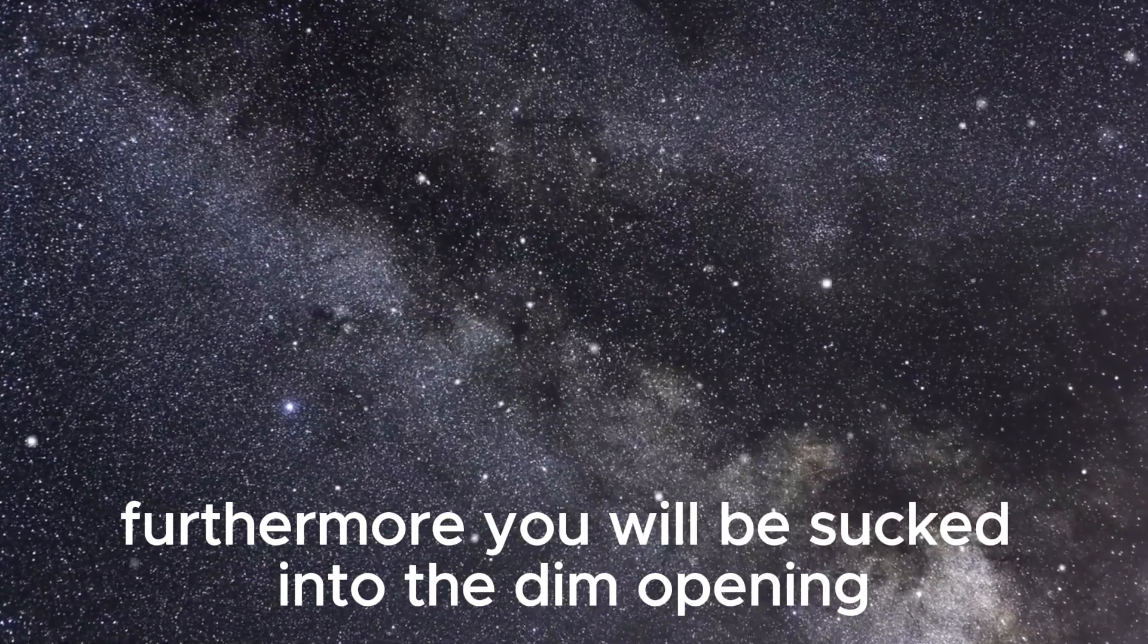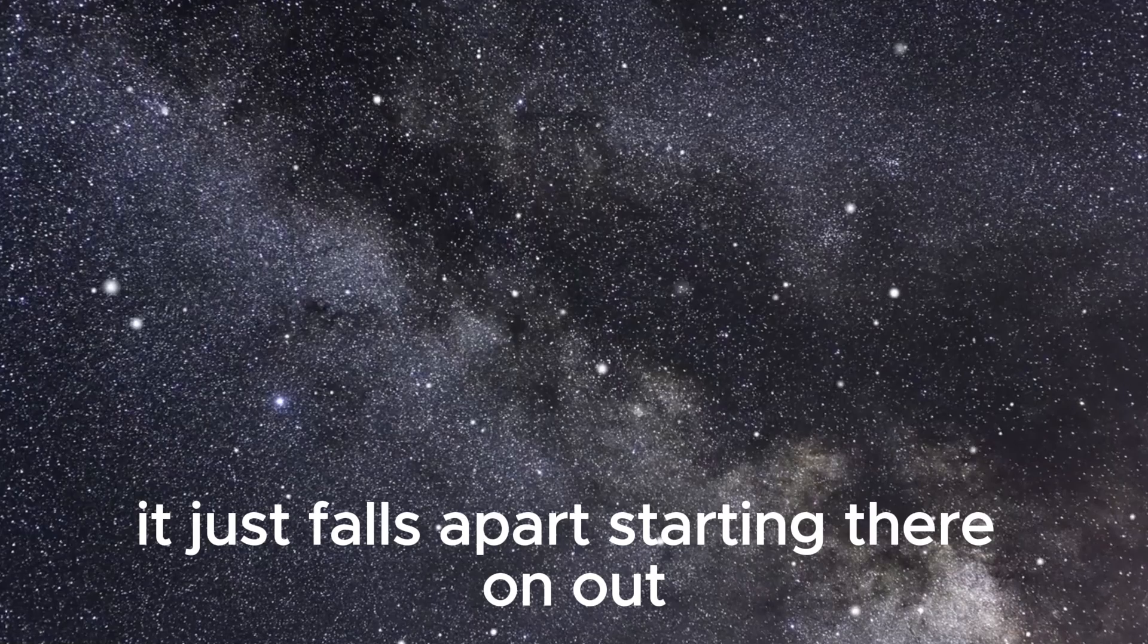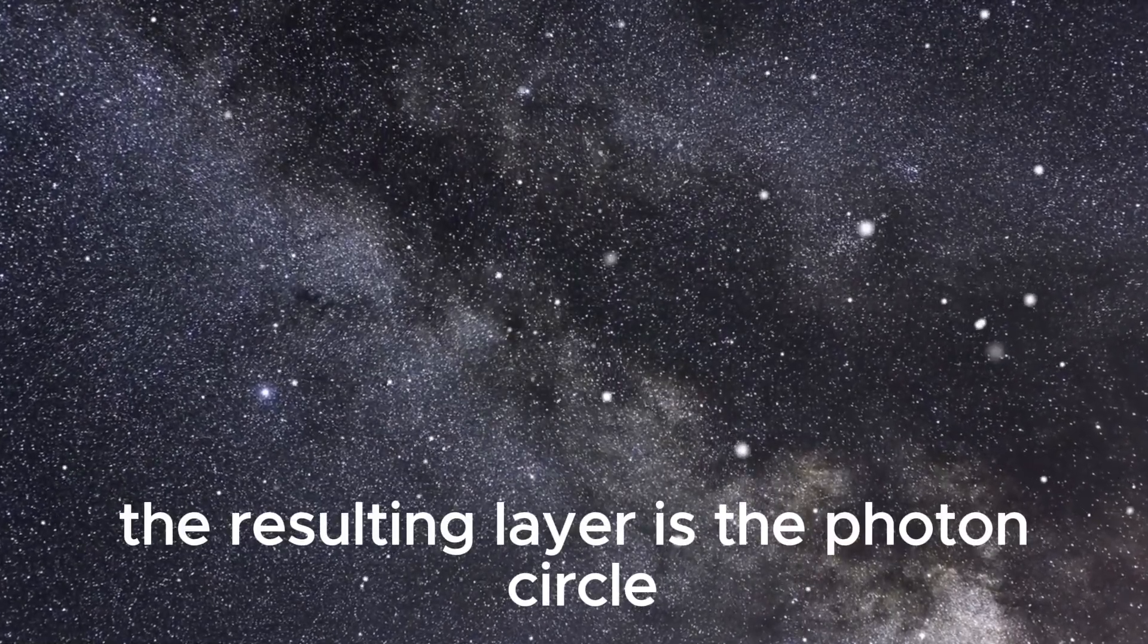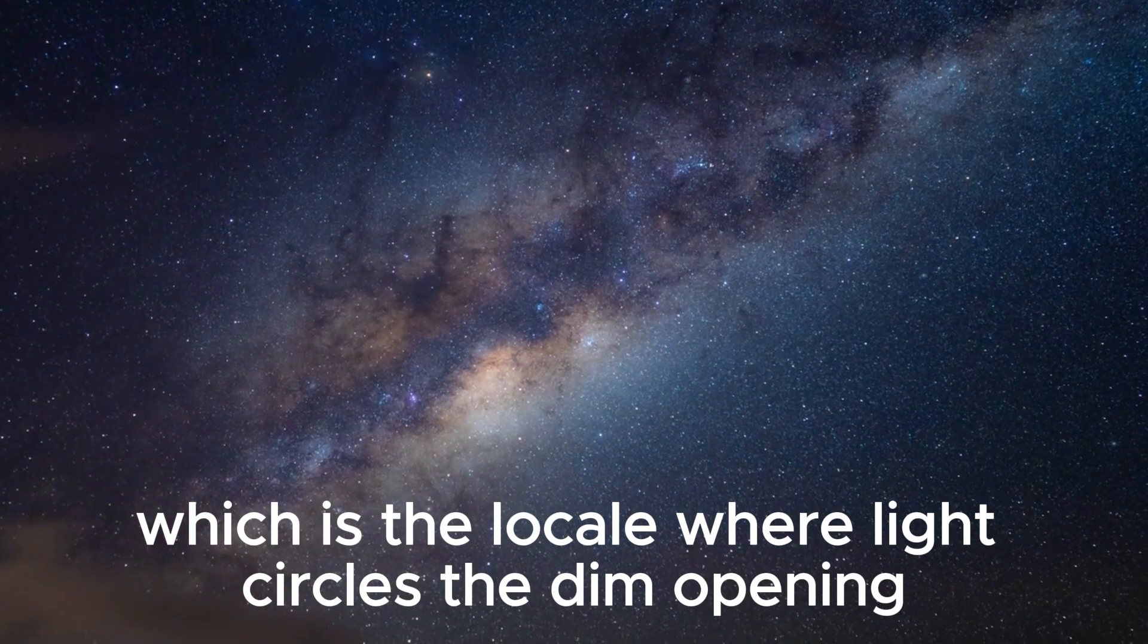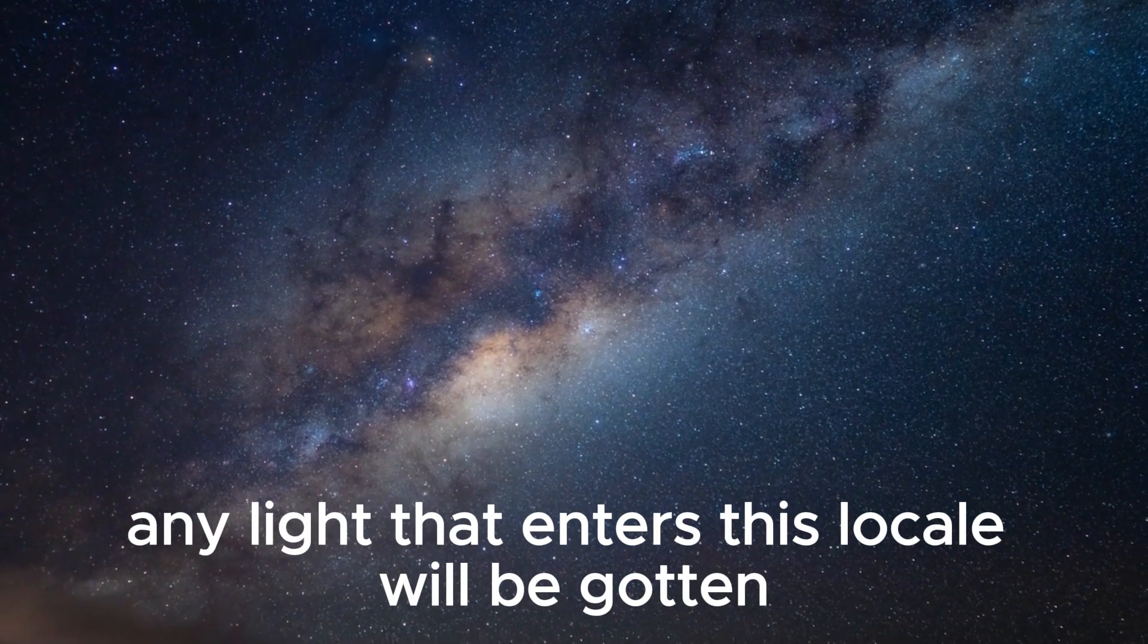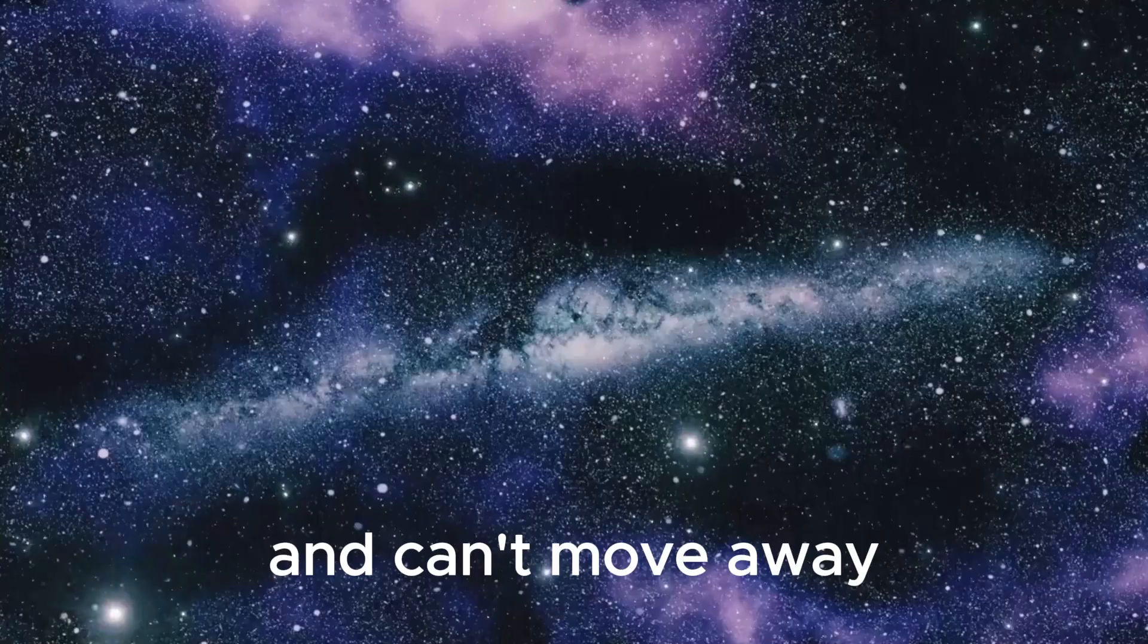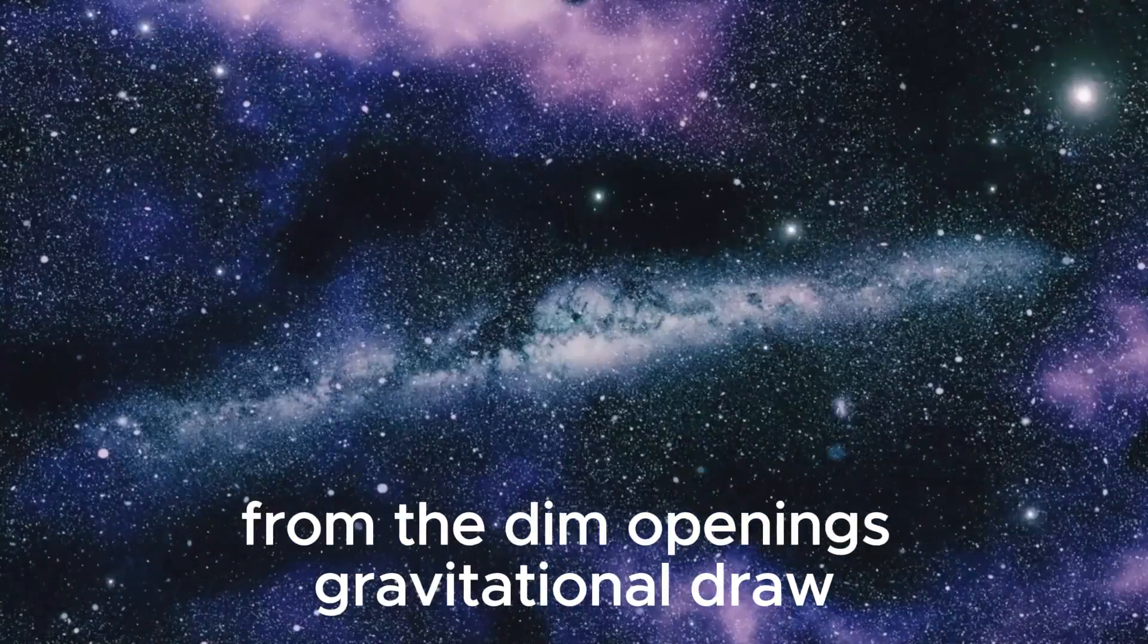It just falls apart from that point on. The second layer is the photon circle, which is the region where light circles the black hole. Any light that enters this region will be captured and cannot escape from the black hole's gravitational pull.